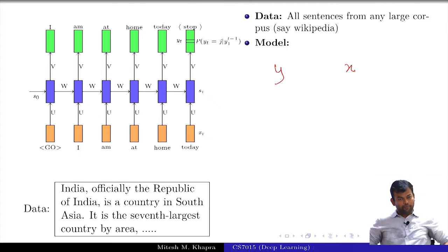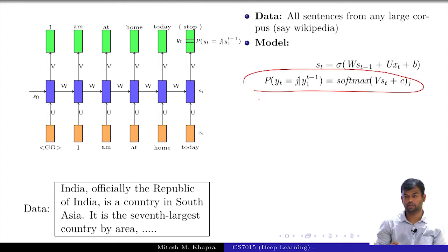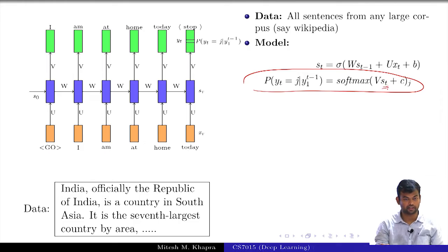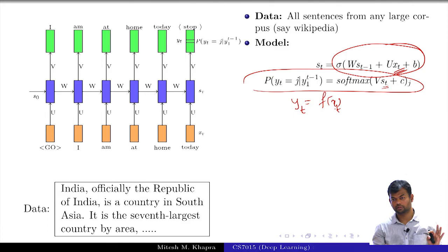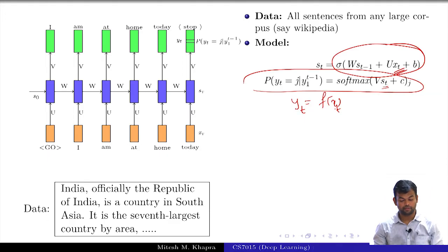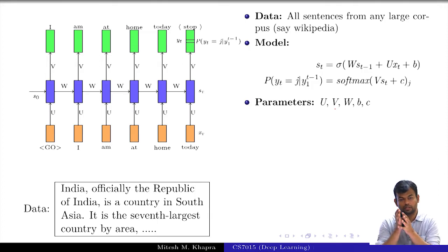At every time step we want to predict a probability distribution, which means we compute softmax. The green vector is y_t as a function of S_t, and S_t is obtained recursively. The parameters are W, b and c. The objective function is cross entropy — specifically the sum of cross entropy losses over all time steps. The learning algorithm is back propagation through time.